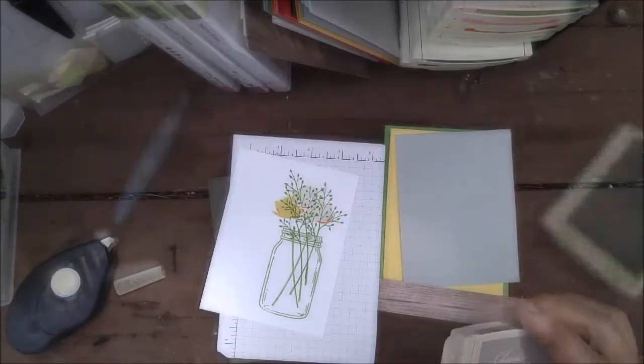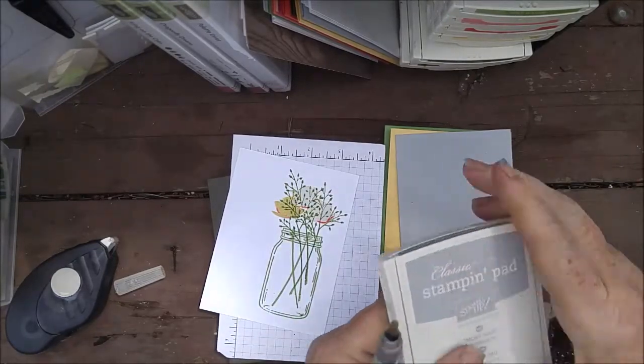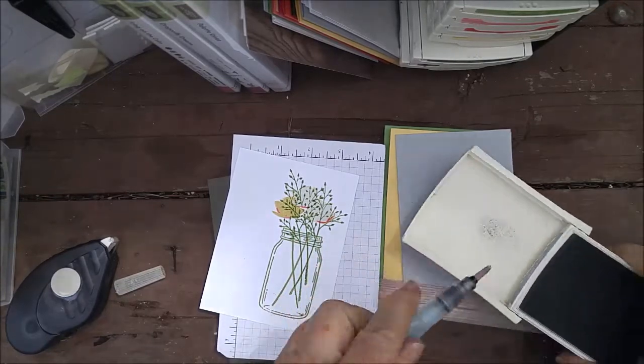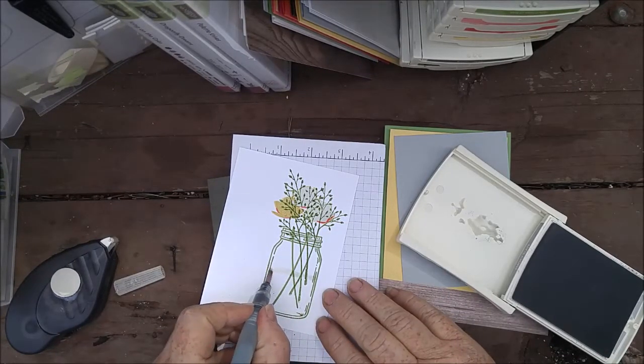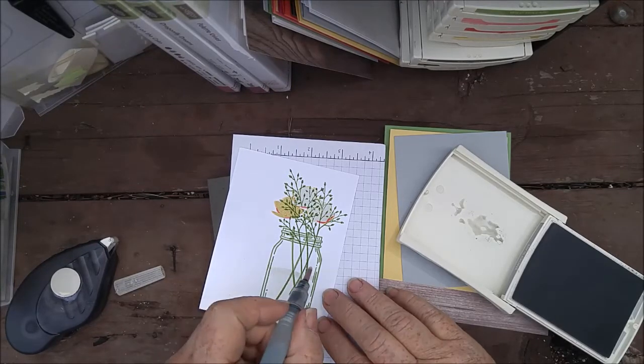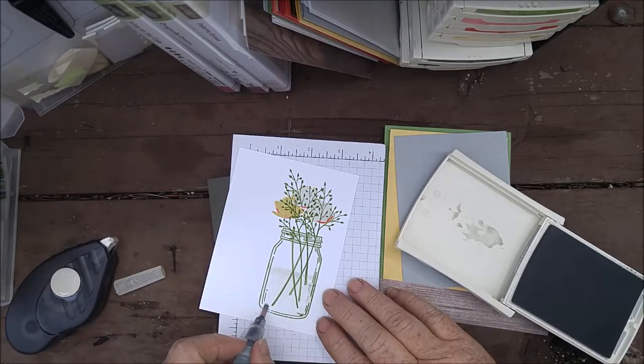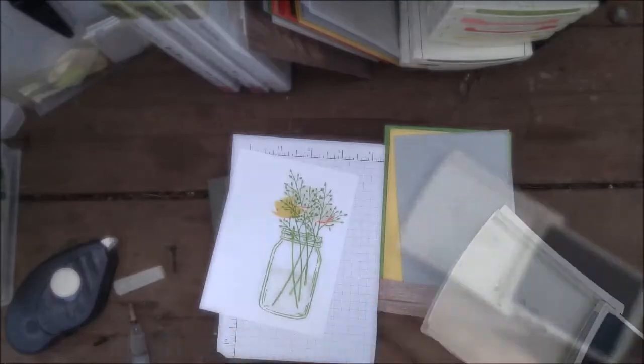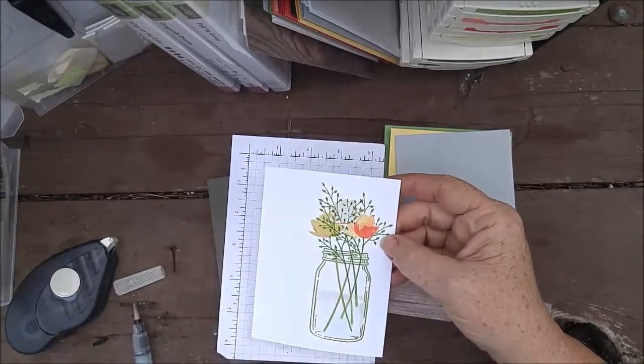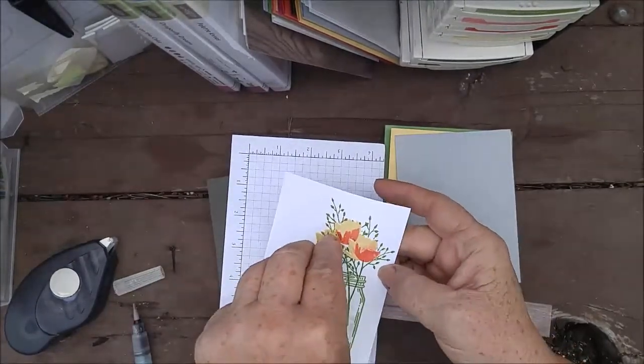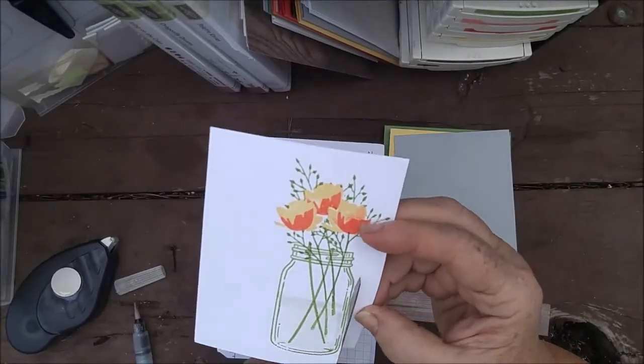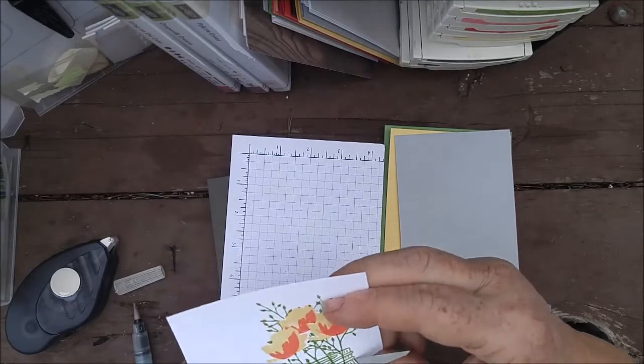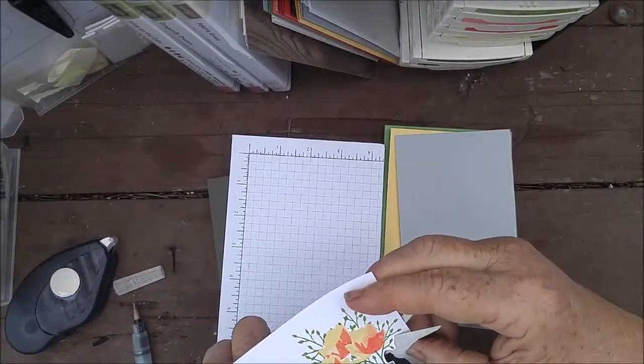And if I had blue, I could fill this in. I think what I'll do is just use a little bit of Smokey Slate and my aqua painter. And just kind of hint at some water in here. Remove the masks. And I think I will cut this out. And it is fussy cutting. I don't have my Big Shot. This does have a die. But if I leave a little bit of white around it, it will not be too hard to cut out.